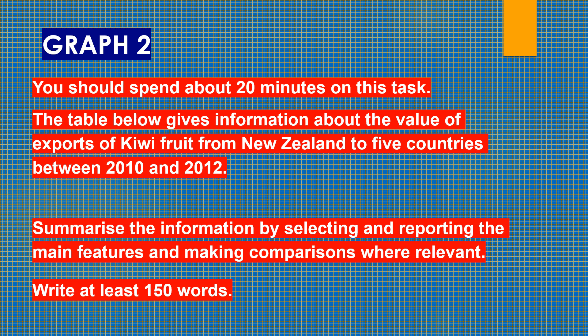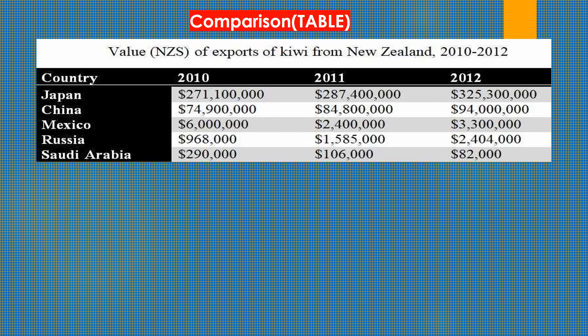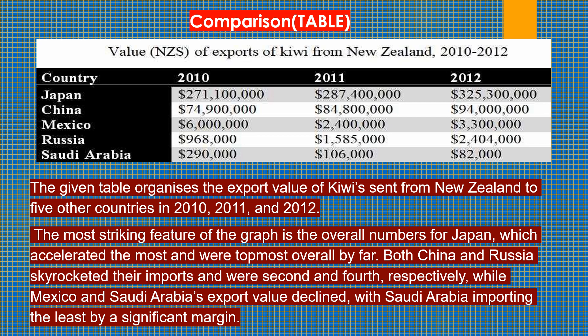Let's take a look at a sample answer. The table organizes the export value of kiwi fruit sent from New Zealand to five other countries in 2010, 2011, and 2012. The most striking feature is the overall numbers for Japan, which accelerated the most and were the highest overall by far. Both China and Russia skyrocketed their imports, coming in second and fourth respectively, while Mexico and Saudi Arabia's export values declined — with Saudi Arabia importing the least by a significant margin.